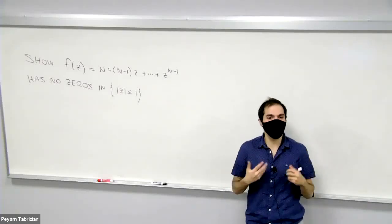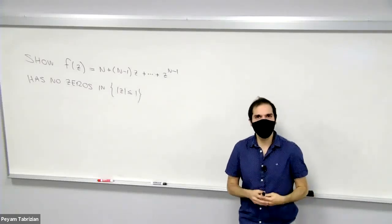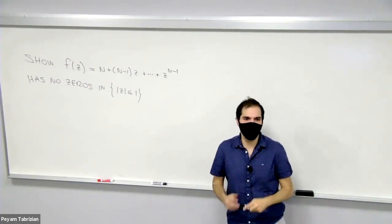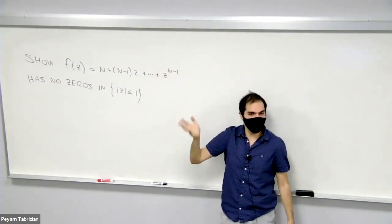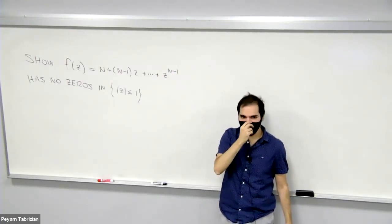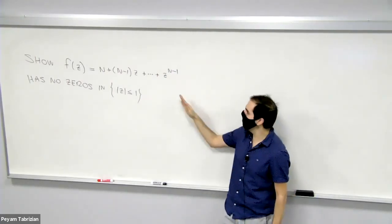Here I would like to solve a beautiful Putnam problem that was recommended to me by the UCI math page. And it says the following: Suppose n is a natural number and z is a complex number, and consider the following polynomial.